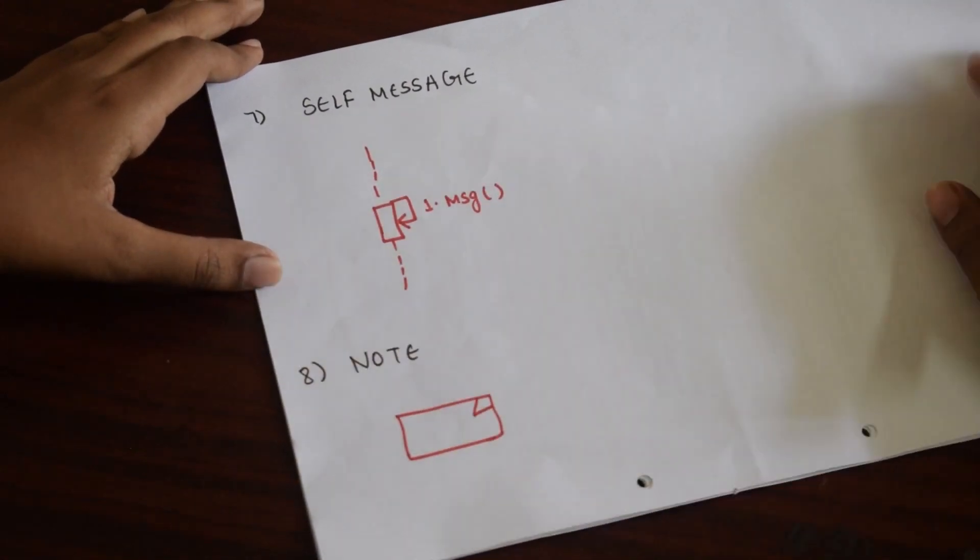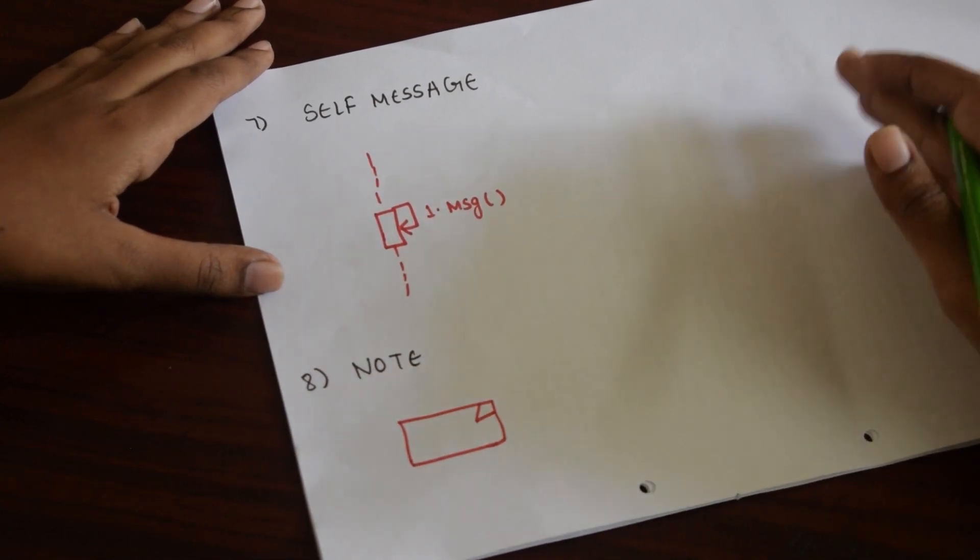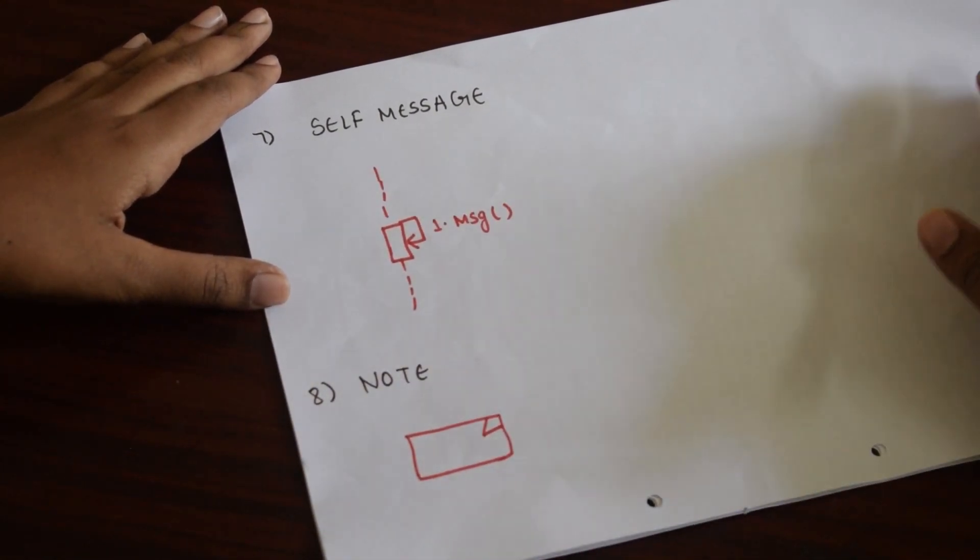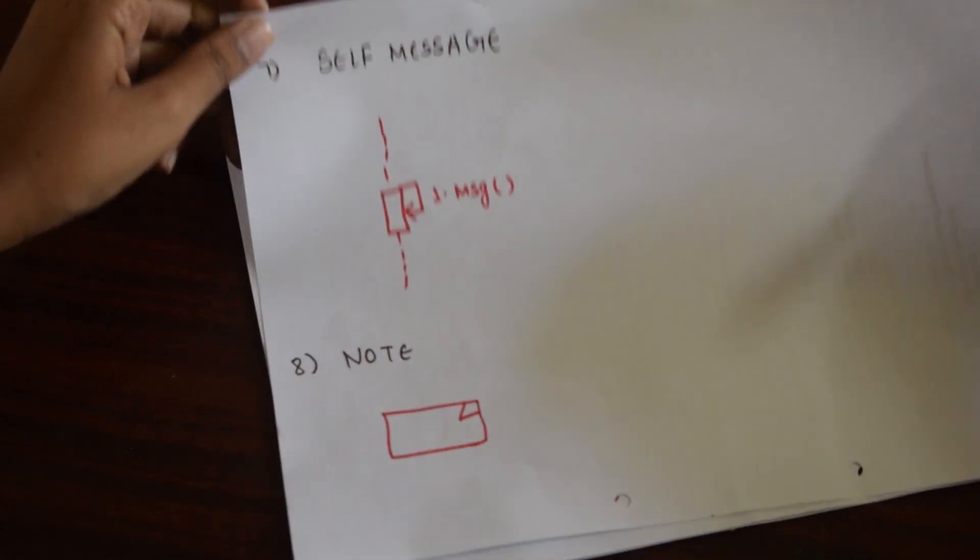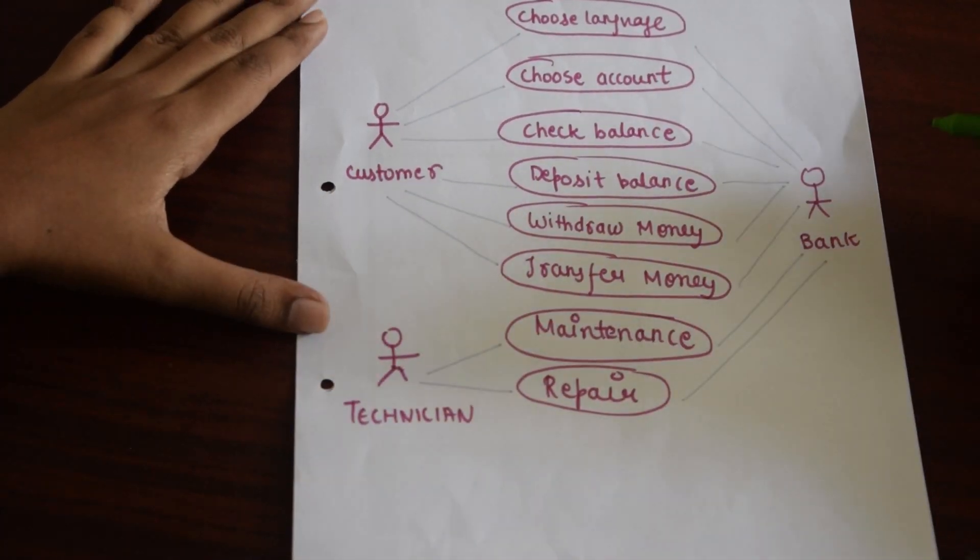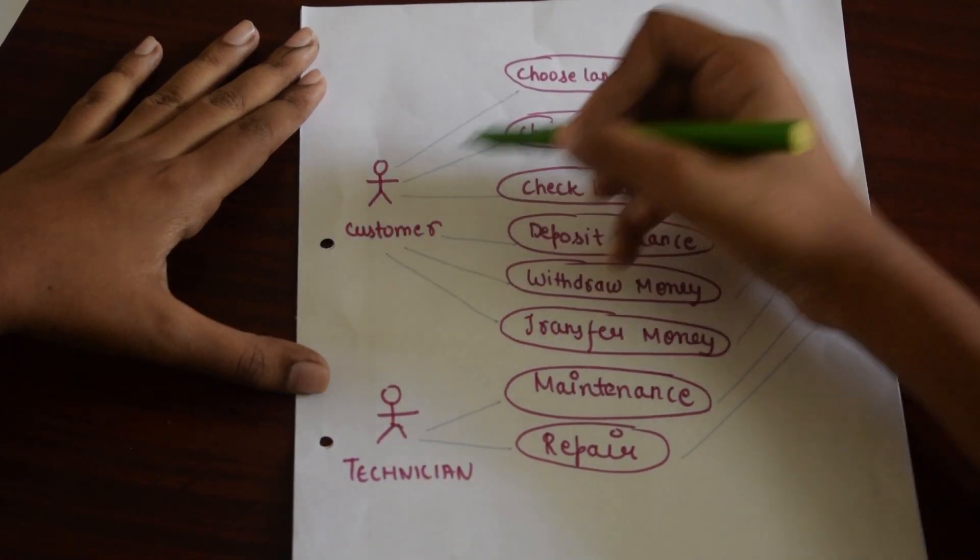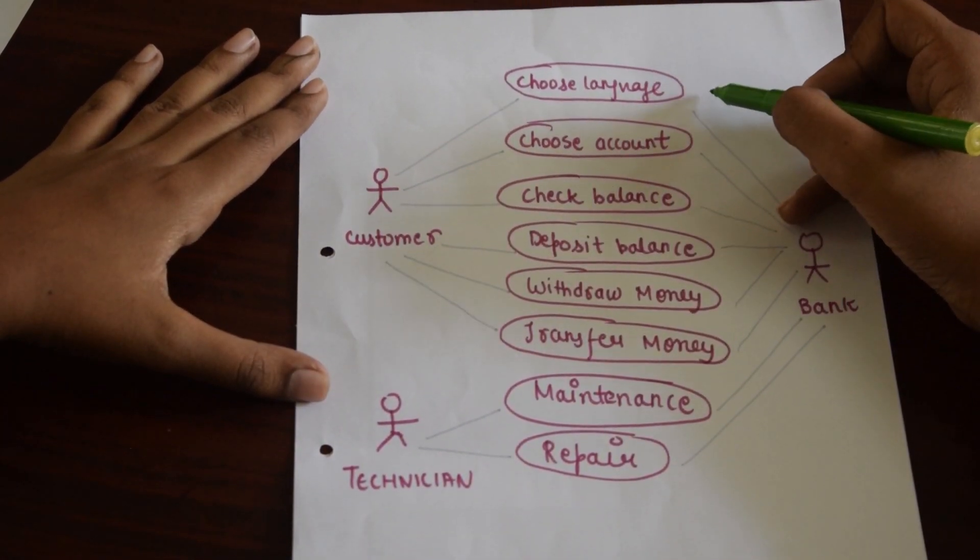Now, we will see one example on sequence diagram, but as sequence diagram is drawn corresponding to activity diagram, which is drawn corresponding to use case diagram, we will see the use case diagram of an ATM machine. One of our team users is a customer, a technician, and a bank.